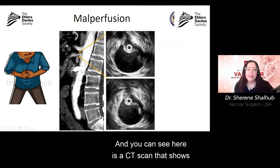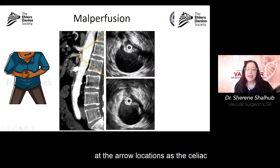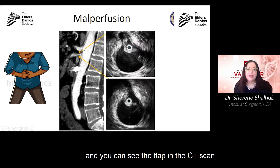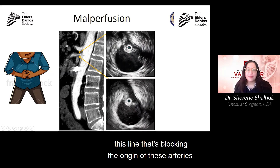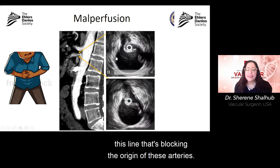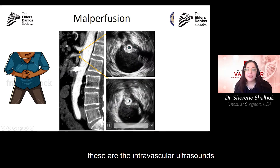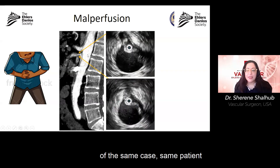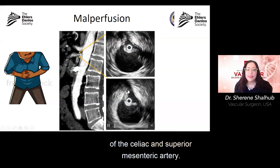You can see here a CT scan showing at the arrow locations the celiac and superior mesenteric arteries. You can see the flap in the CT scan — this line blocking the origin of these arteries. The rolling images are intravascular ultrasounds of the same case showing significant compression of the celiac and superior mesenteric artery.